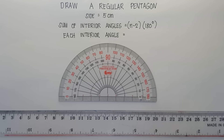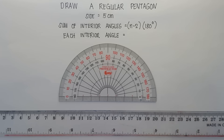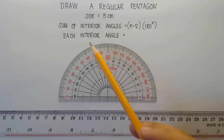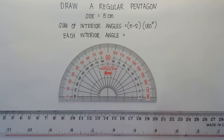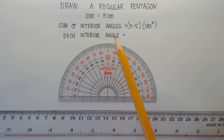Now if you talk about a regular pentagon, it has 5 equal sides and each interior angle must also be equal. So we have 5 interior angles. Now we don't have the value of each interior angle, but we have a given side. So the thing that we will do is we need to find first the measure of each interior angle in order to draw the regular pentagon.